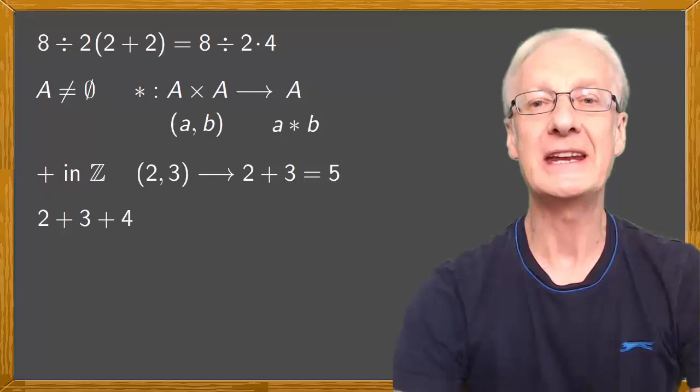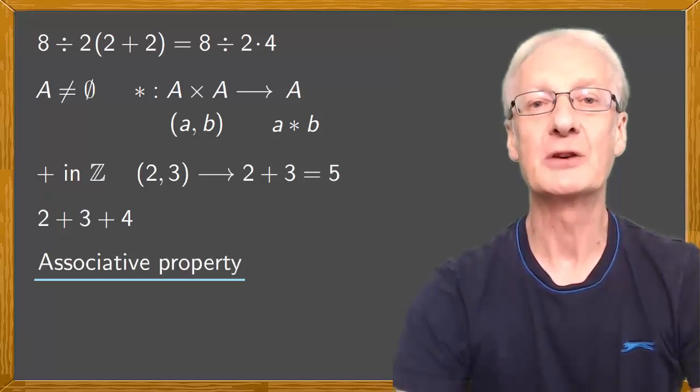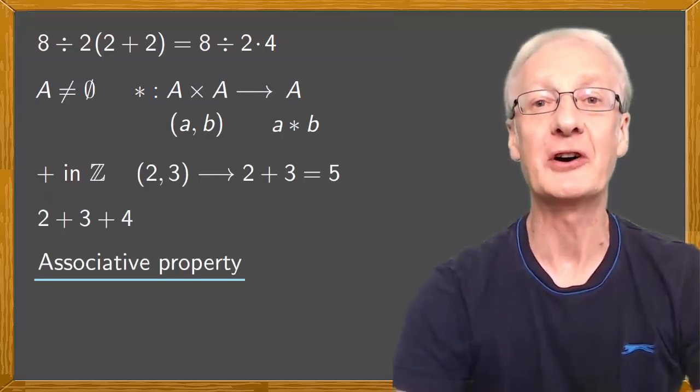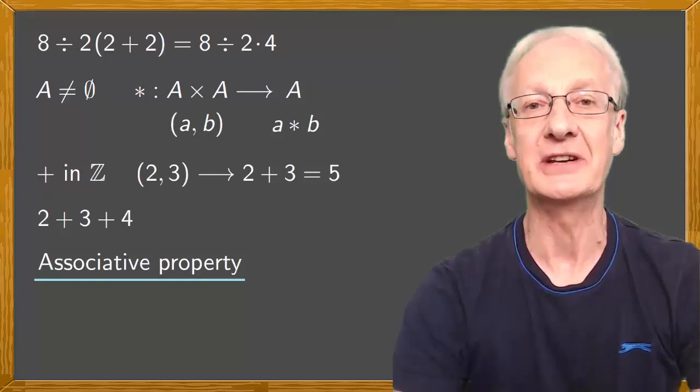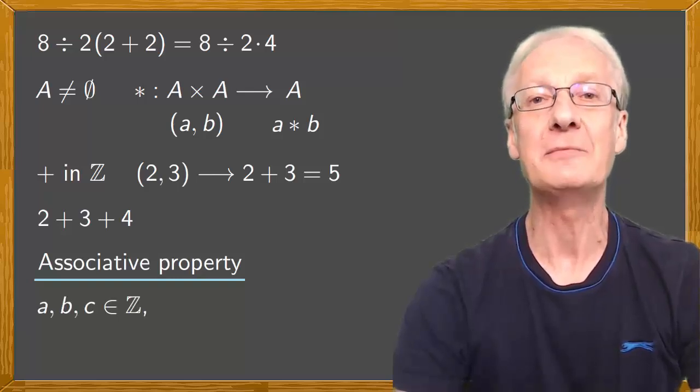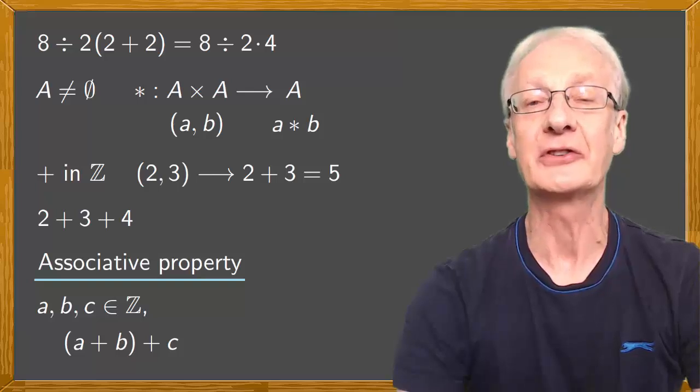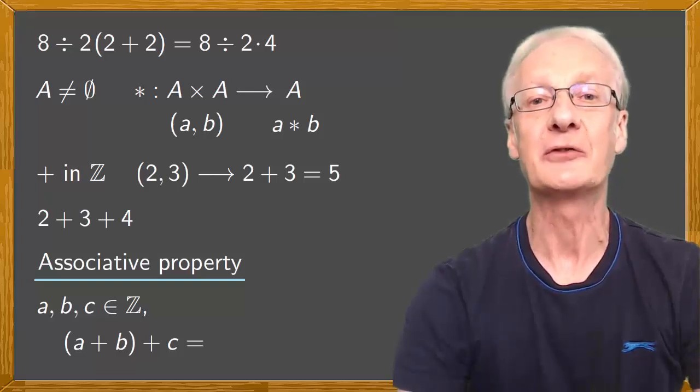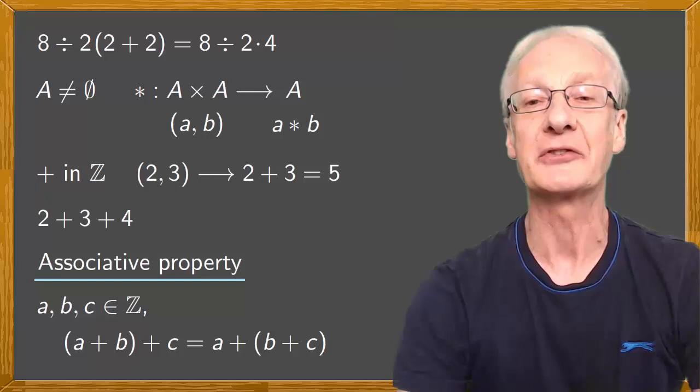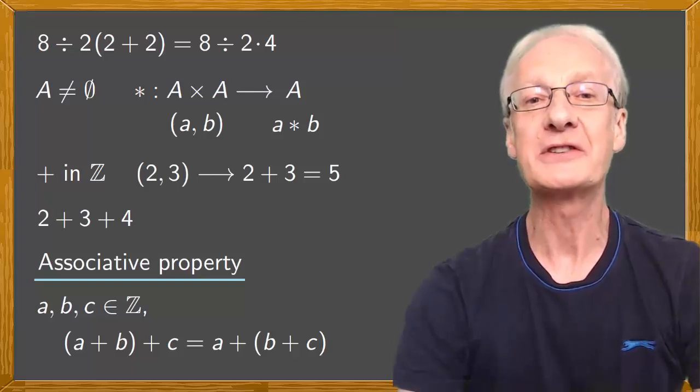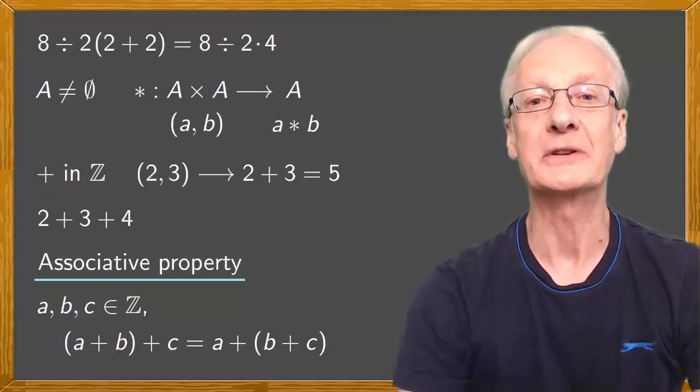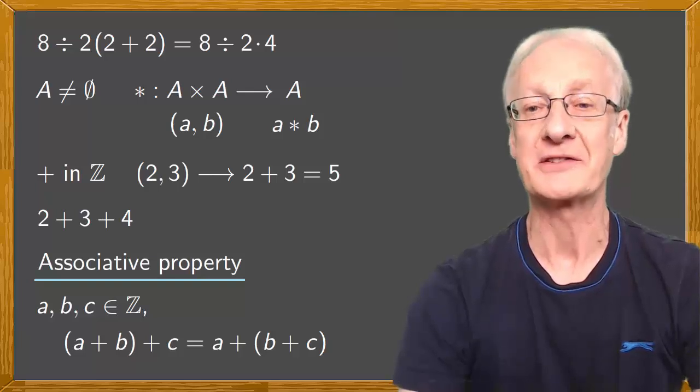The property we are interested in here is the associative property, which is satisfied by both the sum and the multiplication of integers. For example, if A, B and C are integers, then according to the associative property, we'll get the same if we do A plus B first and then add on C, as if we add A to the sum of B plus C. When an operation satisfies the associative property, we can omit the parentheses.